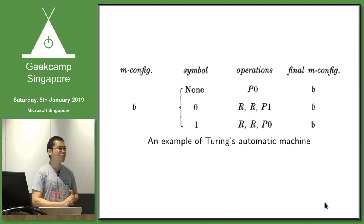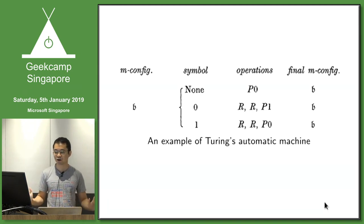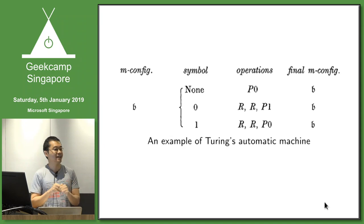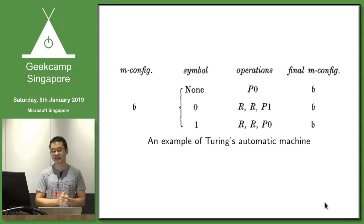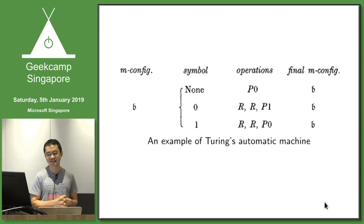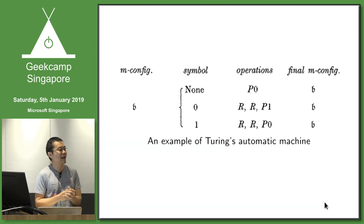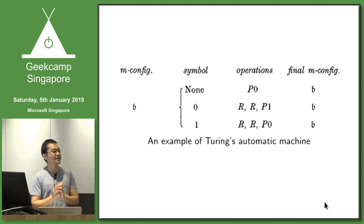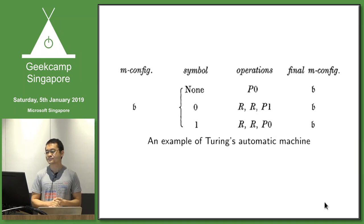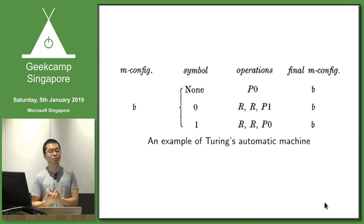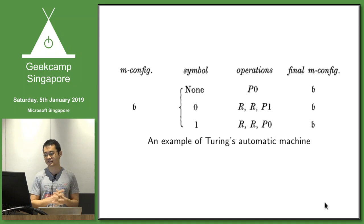He calls this 'mConfig' — machine configuration — here it's all B, so we can forget about that. Then there's 'symbol', meaning what is currently observed on the tape. There are three cases: if blank, it prints the character 0. If it observes a 0, it moves the head right twice and prints the character 1. If it observes a 1, it moves the head right twice and prints the character 0.